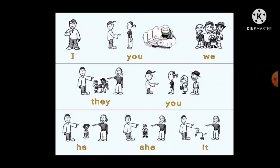The pronouns are: I, you, we, they, you, he, she, it. First person: I (singular) and we (plural). Second person: you — both singular and plural are 'you'. Third person singular: he, she, it; third person plural: they.